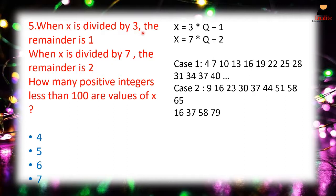The next question says: when x is divided by 3 the remainder is 1, and when x is divided by 7 the remainder is 2. How many positive integers less than 100 can be values of x? Using the dividend formula, we get two equations: x = 3q₁ + 1 and x = 7q₂ + 2.